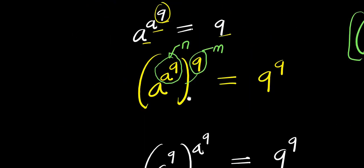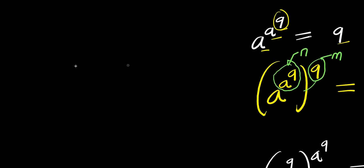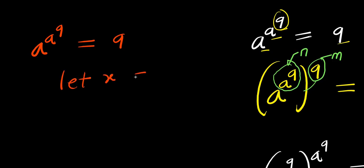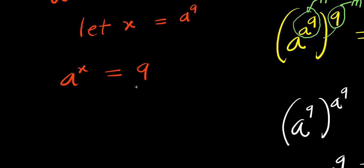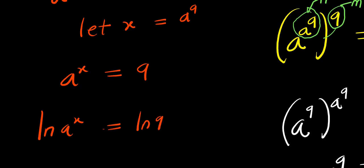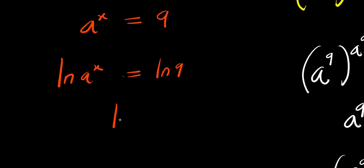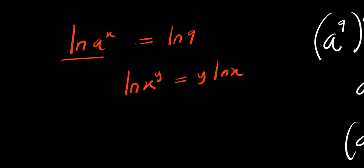Now let's consider solving this using another method. We have a^(a^9) = 9. Let x = a^9, so we replace it and get a^x = 9. Taking the natural log of both sides: ln(a^x) = ln(9). Using the identity ln(x^y) = y·ln(x), we get x·ln(a) = ln(9).